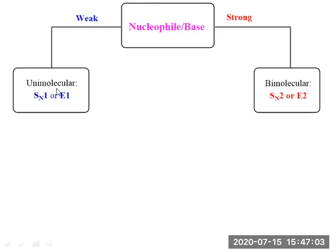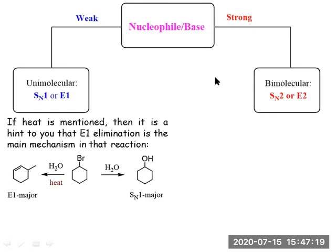There are two possibilities: unimolecular (SN1 or E1) or bimolecular (SN2 or E2). For a tertiary substrate, there are good chances of SN1 or E1 because a carbocation can be generated easily. If the reaction is at higher temperature, elimination is favored; at lower temperature, SN1 substitution is favored and the leaving group is replaced by OH to give the substitution product.